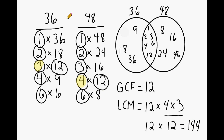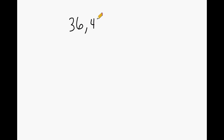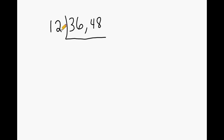Now let's use the ladder method to find the GCF as well as the least common multiple. Write 36 and 48 next to each other with an upside-down division sign. This is called the ladder method because you eventually create steps to get to your answer. We already know that 12 is the largest number that fits inside both numbers, so we write the greatest common factor, 12, on the outside.